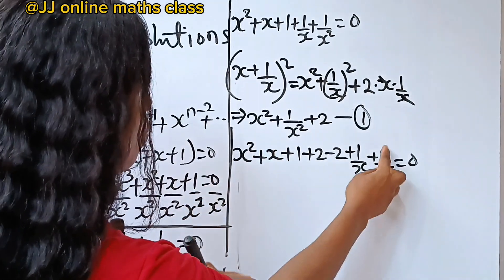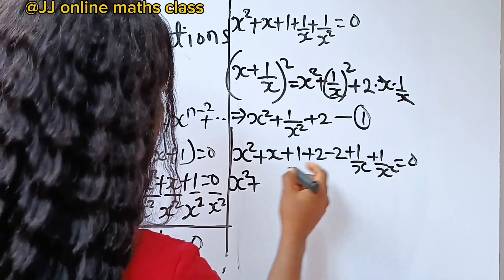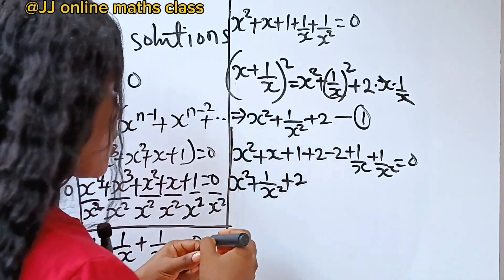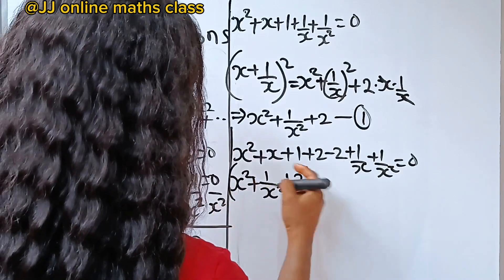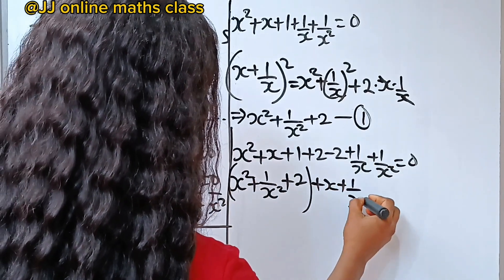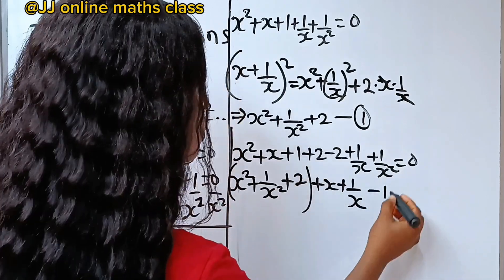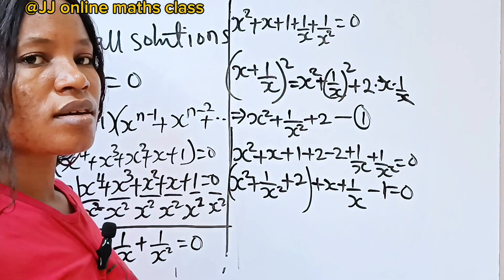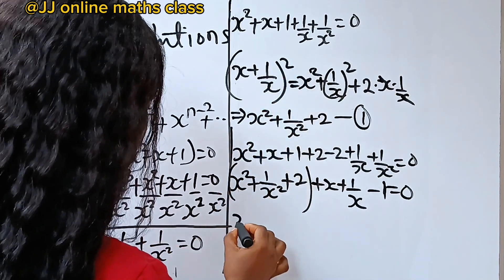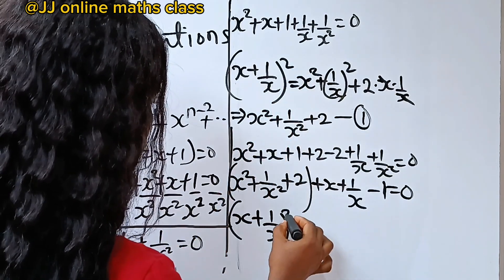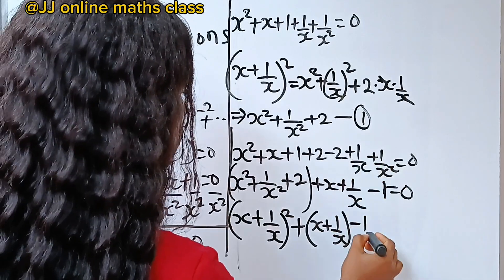Bringing terms together: x squared plus 1 over x squared plus 2, then plus x plus 1 over x, then 1 minus 2 gives minus 1, all equal to 0. So we substitute using equation 1: x plus 1 over x, all squared, plus x plus 1 over x, minus 1 equals 0.